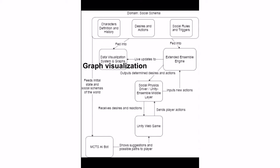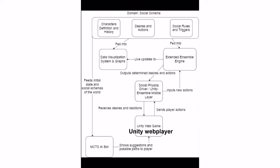Social states are reflected by the data visualization graphs. The Ensemble Engine computes the effects of the social interactions. Unity Web Player is for the graphics and uses the middle layer to communicate with Ensemble. Finally, the Monte Carlo tree search bot can analyze game strategy and balance.